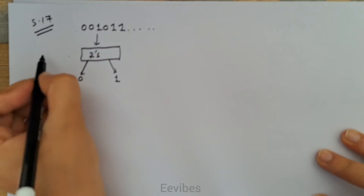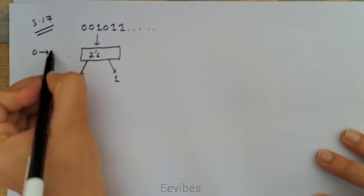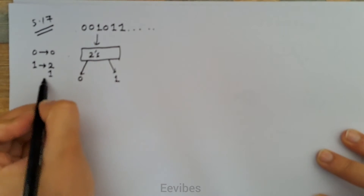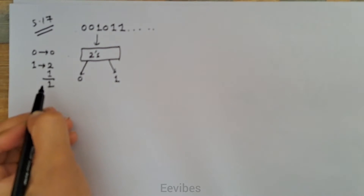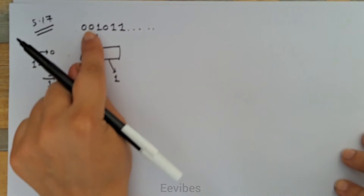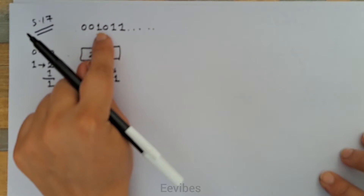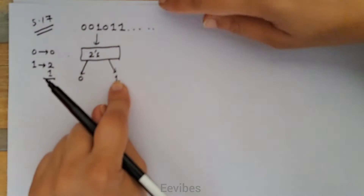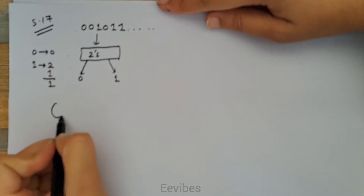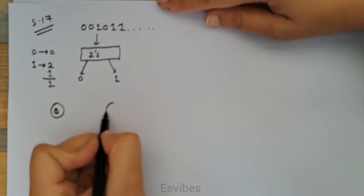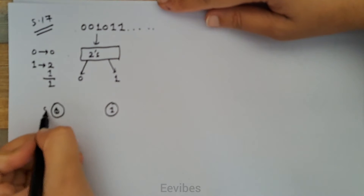The two's complement of zero is always equal to zero, while the two's complement of one is obtained by subtracting one from two, which is equal to one. So output will remain equal to zero as long as the input is equal to zero, but when the first one is encountered, then output should be equal to one. Basically we will have two states: the zero state and the one state.